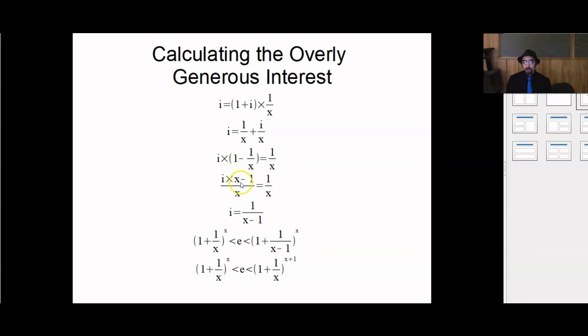And multiplying numerator and denominator by x here, we get i × (x - 1)/x = 1/x. With some algebra, we get i = 1/(x - 1). So that tells us that for our upper bound, we can assume that the interest rate, instead of being 1/x, is going to be 1/(x - 1). So for our underestimate, we have (1 + 1/x)^x. For our overestimate, we have (1 + 1/(x - 1))^x, because we presume this slightly greater interest rate of 1/(x - 1) was compounded x times.